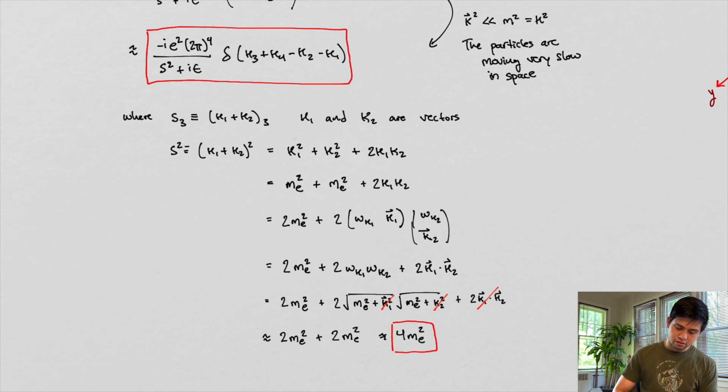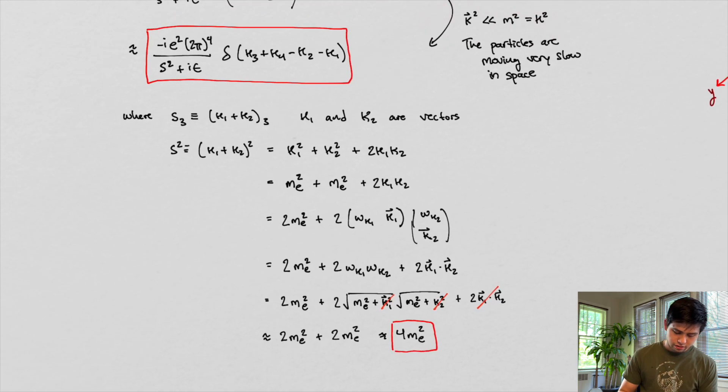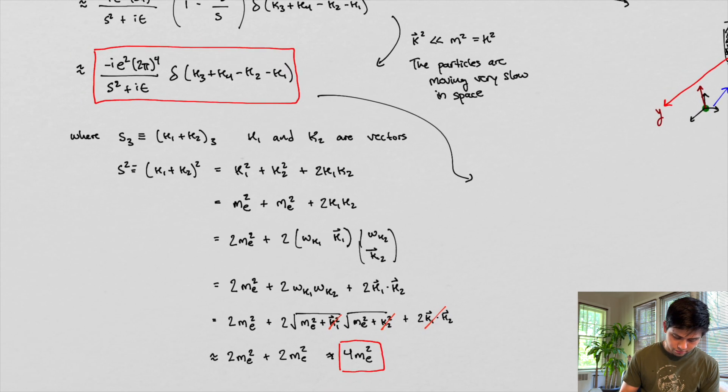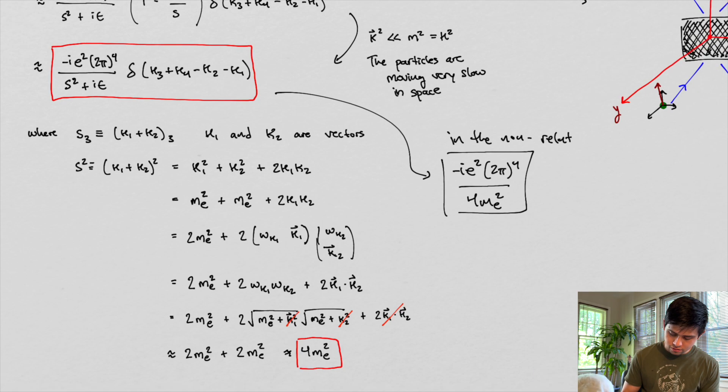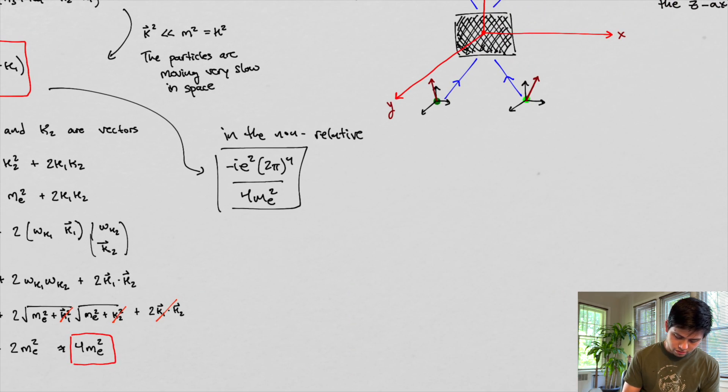So in the limit, in this limit, this guy here, essentially, goes to, we'll write this down, i e squared, 2 pi to the 4, times 4 m e squared. So in the limit, in the non-relativistic limit. That's our answer.